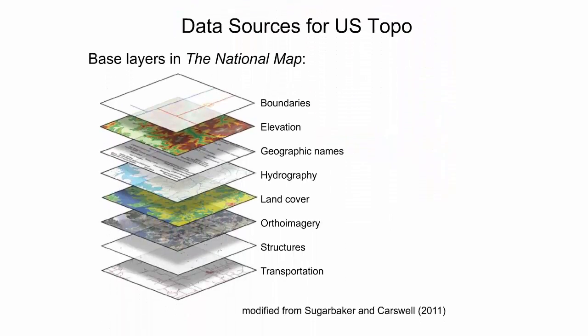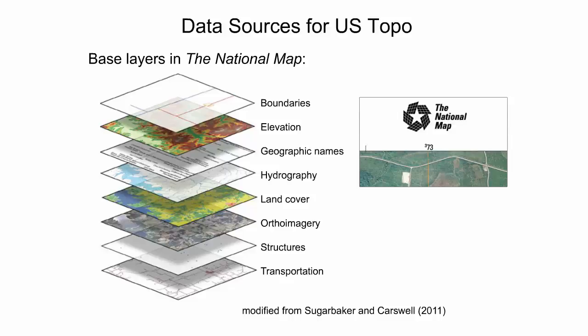Each map quadrangle is constructed from key layers of geographic data adopted from the National Map, which is a collaborative effort of USGS and other public agencies to improve and deliver topographic information for the United States. This relationship is also indicated through the National Map visual identity logo on the map collar of each US Topo map. The geospatial data available from the National Map include boundaries, elevation, geographic names, hydrography, land cover, ortho imagery, structures, and transportation.